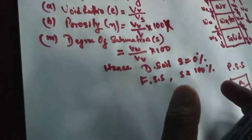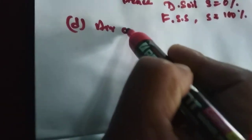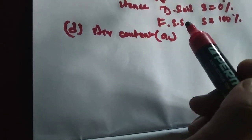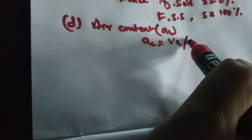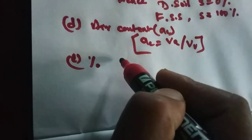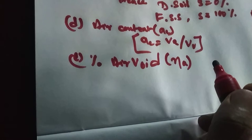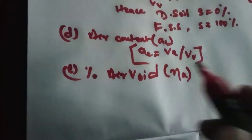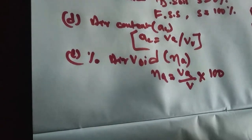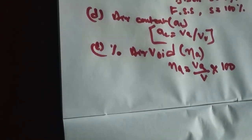Air content, AC, is the ratio of volume of air to the volume of void. Percentage of air void, Na, is the ratio of volume of air to the total volume. Na equals Va divided by total volume times 100.